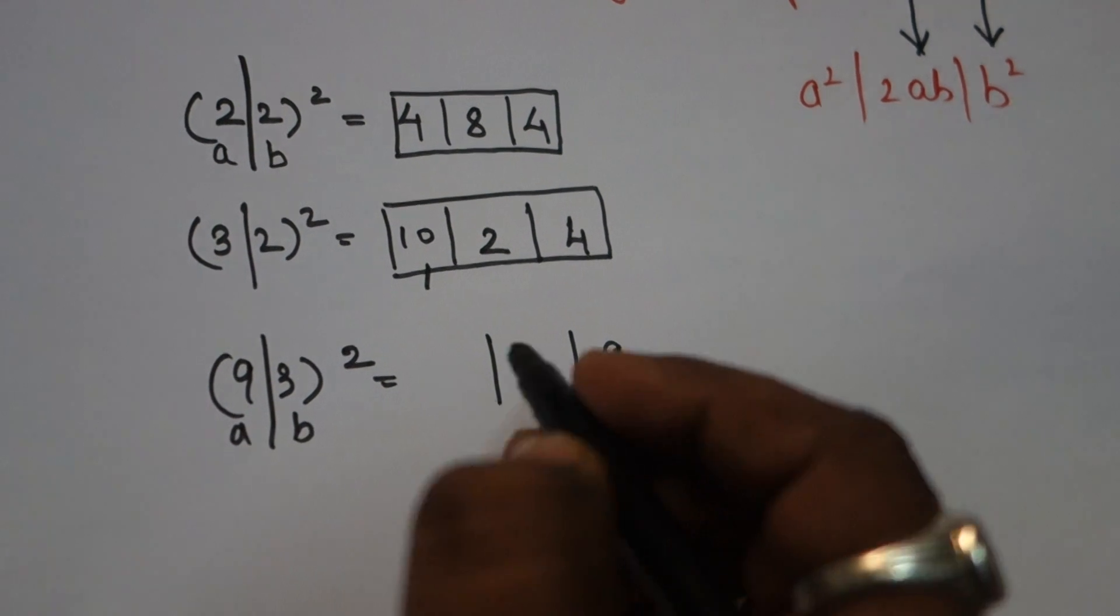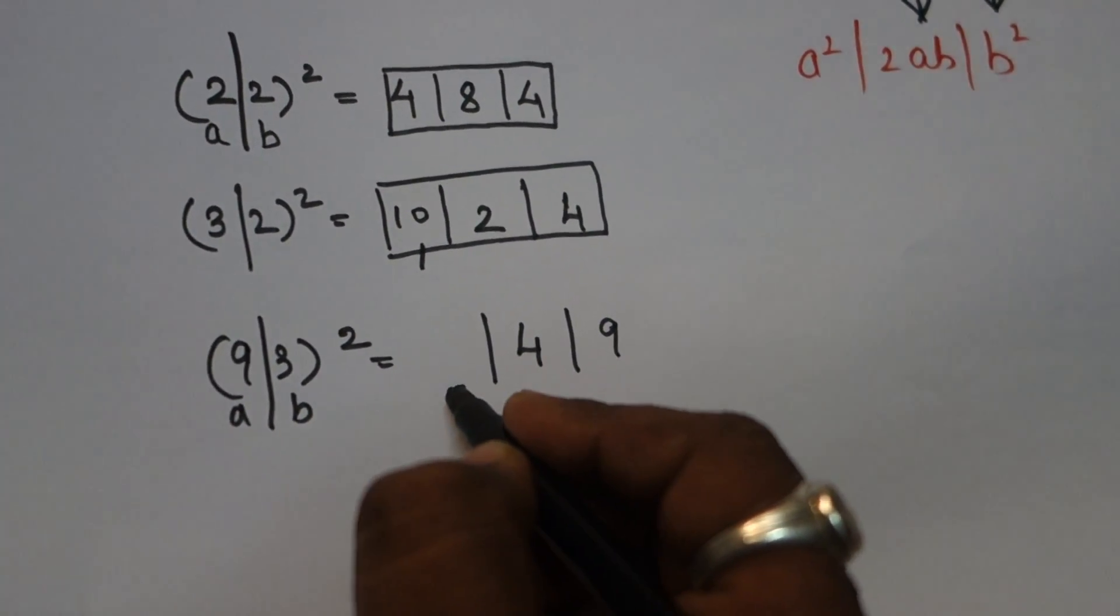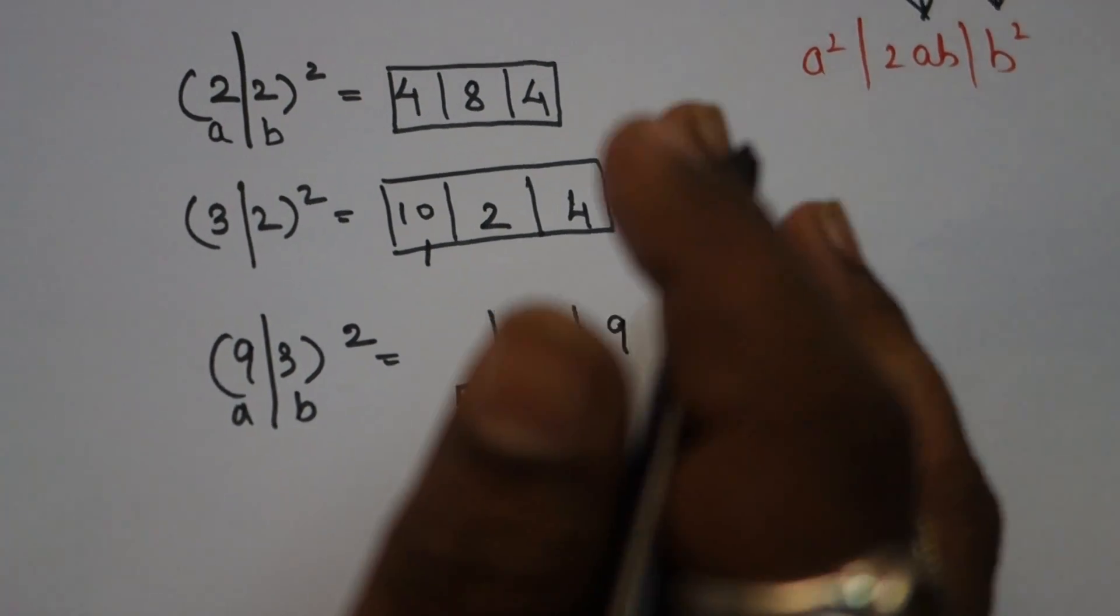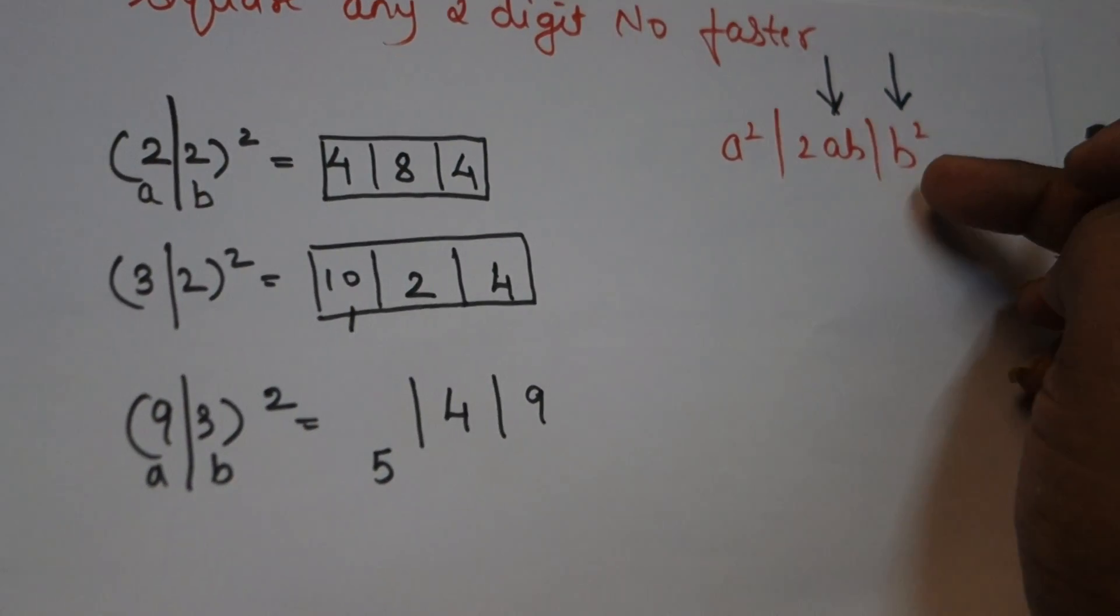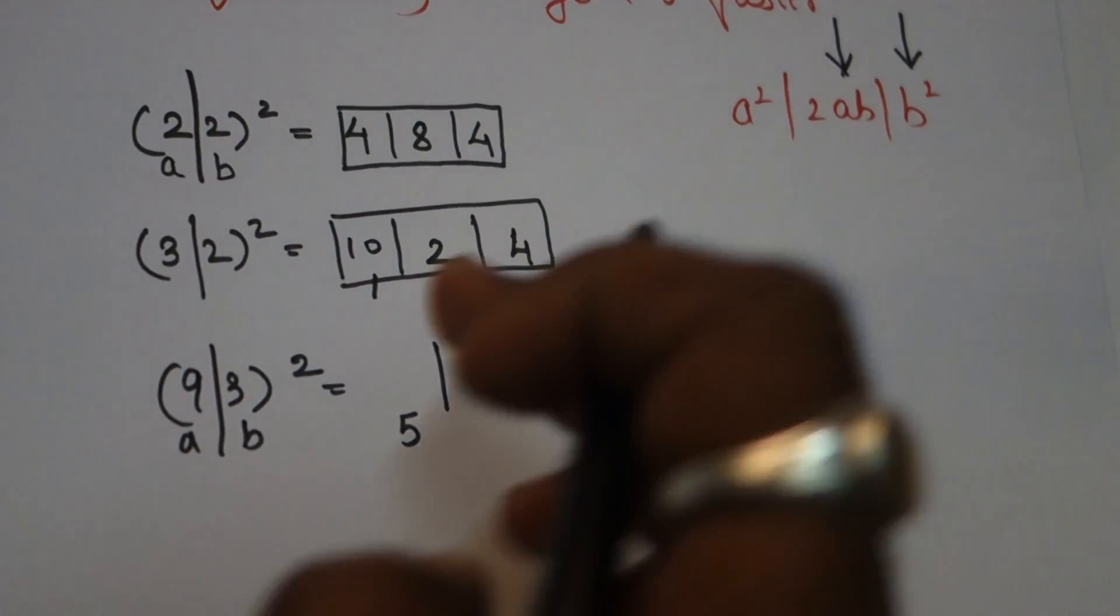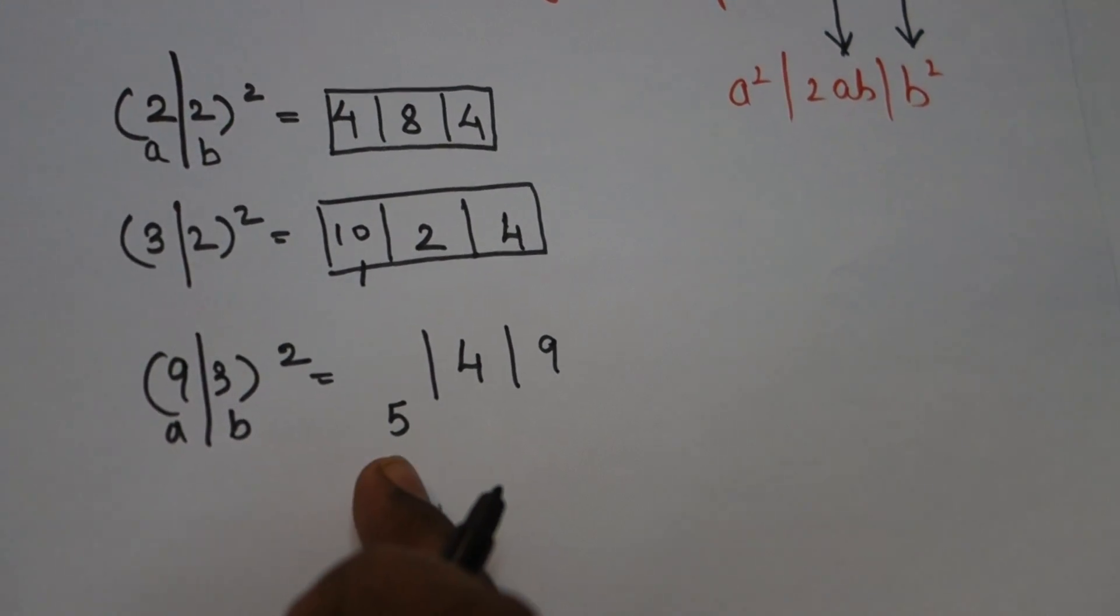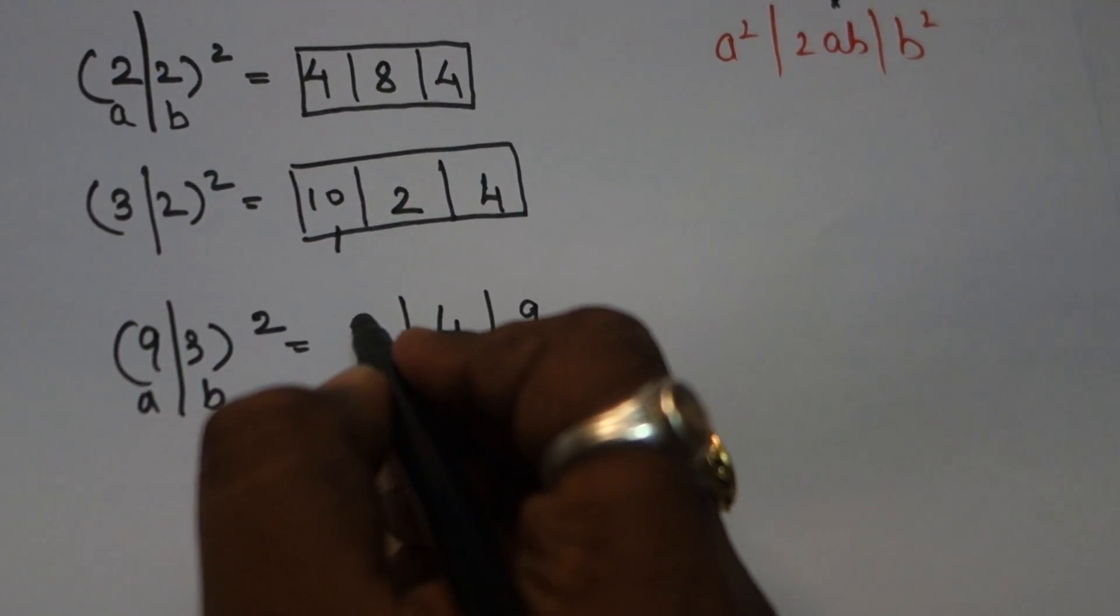18×3 is 54, so I will write 4 and take 5 as carry forward. Remember, for b² and 2ab, always consider only the unit place. Last step: a square. 9² = 81, plus the carry forward 5, equals 86.